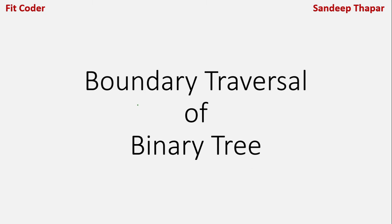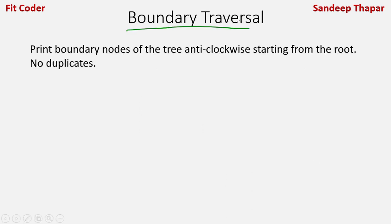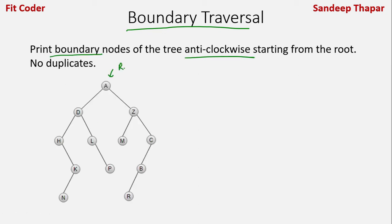In this video we will discuss how we can find the boundary traversal of a binary tree. In boundary traversal we print the boundary nodes of the tree in anti-clockwise direction starting from the root. Node A is the root node and going anti-clockwise the boundary nodes are A, D, H, K, N, P, M, R, B, C, and Z.